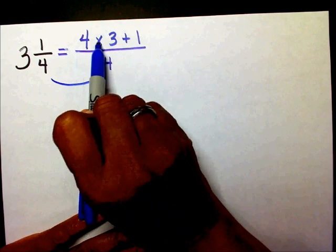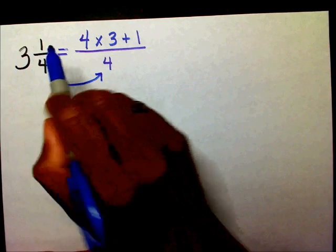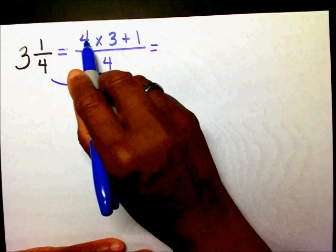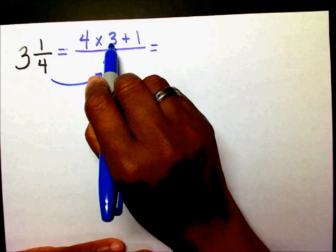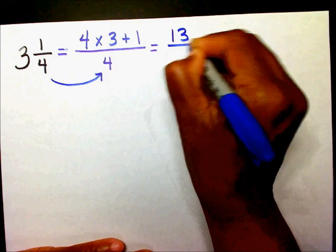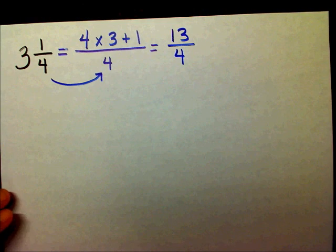So four times three plus one. Now you just need to treat this, you need to simplify this. Four times three is twelve, plus one is thirteen. And bring your four over.